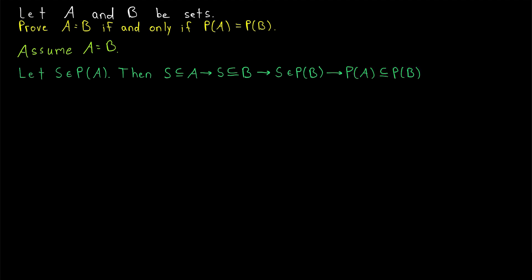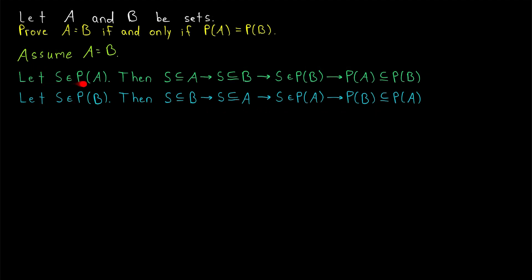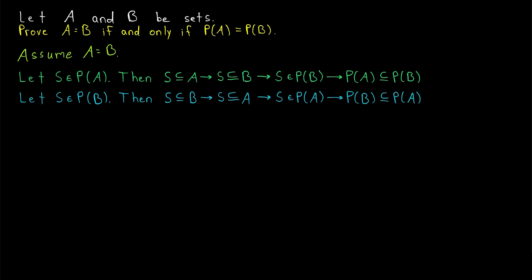Note that since our two sets A and B have no meaningful difference — not just because we're assuming they're equal, but because they are both arbitrary sets — we can apply this same logic to prove that the power set of B is a subset of the power set of A. It's the exact same argument with the A's and B's swapped. We take an element from the power set of B, which by definition is a subset of B; since B and A are equal, it's also a subset of A, so it's an element of the power set of A. Thus the power set of B is a subset of the power set of A, and we have proven that the power set of A equals the power set of B. That completes the first direction of the proof.